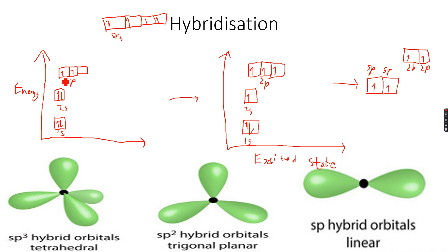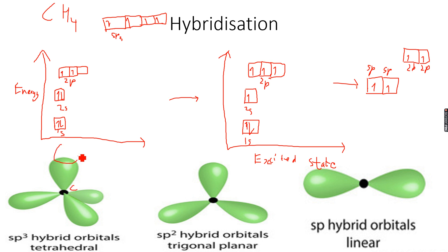In the case of CH4, methane, this black dot in the center represents the central carbon atom. Then hydrogen combines here, hydrogen combines here, hydrogen combines here, and hydrogen combines here.